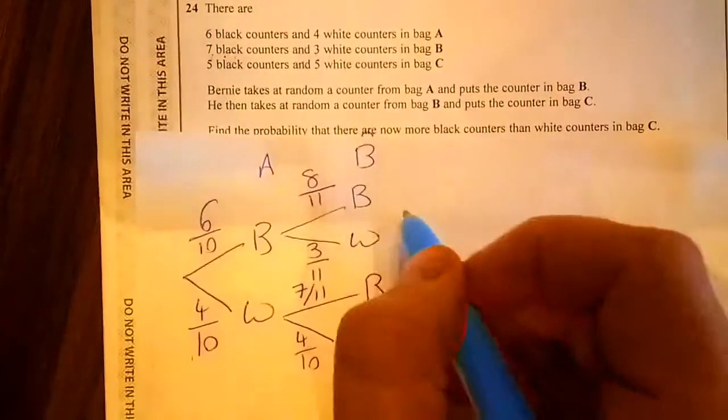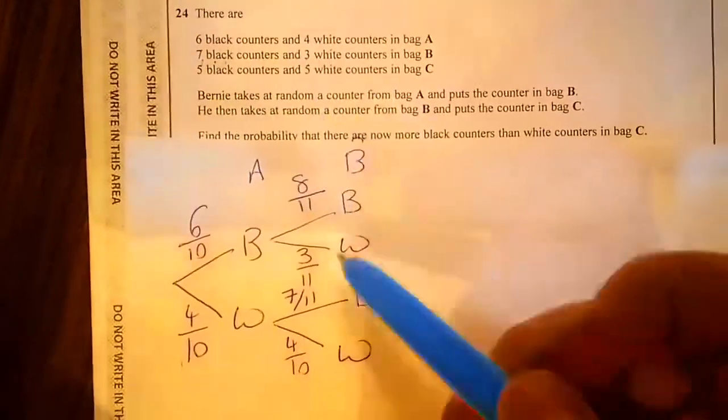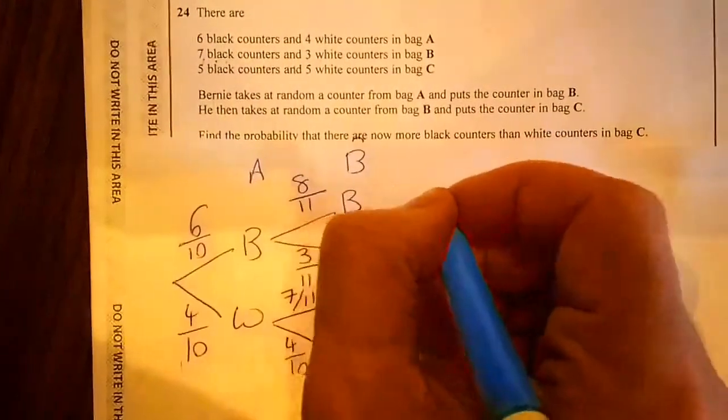Now bag C you might want to do another branch, but this is not what it's asking. It's asking when are the black counters more than white. Now in this situation here.